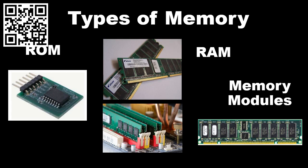This video demonstration is going to discuss the types of memory. If you remember from our lecture, we discussed we have two basic types: ROM memory and RAM memory. Your ROM stands for read-only memory, and this is a type of memory you cannot write to. Then you've got your RAM memory, which stands for random access memory — this is your primary working type of memory for the computer.